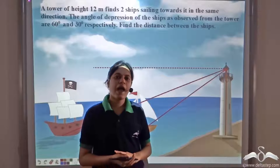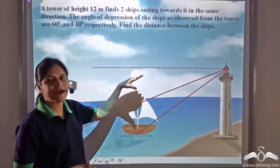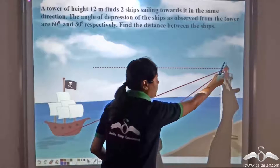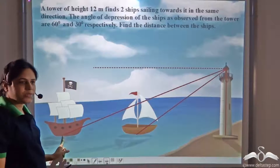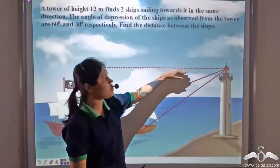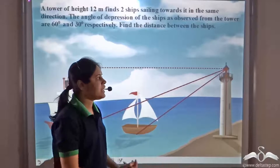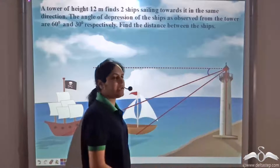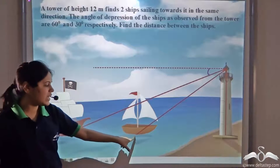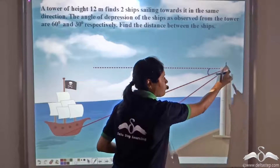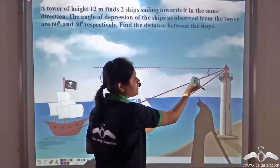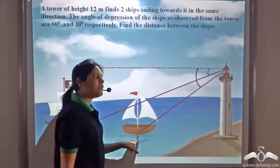The angle of depression is the angle between the horizontal line and the line of sight. If the observer is here, we take a point on the observer and a point on the object. The line joining the observer and the object is the line of sight, and we draw a horizontal line from the point of observation. The angle between this line and the horizontal line is the angle of depression for that object — that is for each ship.